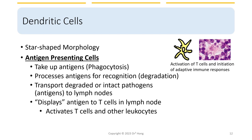The next cell type is dendritic cells. They have a star-shaped morphology — under the microscope they often look like a star. They are the major antigen-presenting cells and serve as the bridge between innate and adaptive immune cells. Their job is to take up antigens by phagocytosis, eat up the invading pathogens, process the antigens for recognition, degrade them, and transport degraded or sometimes intact antigens to lymph nodes. There, they display the antigen or part of the antigen to T cells inside the lymph nodes, activating T cells and other leukocytes.